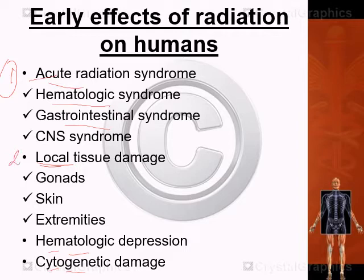Exposure to ionizing radiation can have early effects on the gonads — sterility if high doses are involved — on the skin, causing skin burns, and on the extremities. We also have hematologic depression and cytogenetic damage. These are early effects, meaning they can be seen immediately in a matter of hours or days. This is just a brief overview.